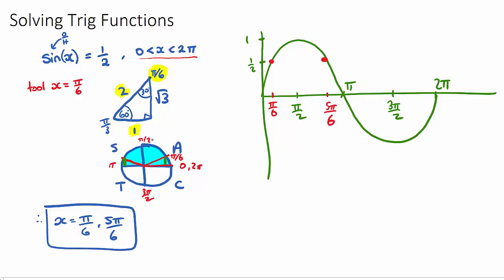So we can either solve it using our magic triangles and our unit circle or graphically this is the times that it equals a half in the first period. So that's an example of solving a trig function.